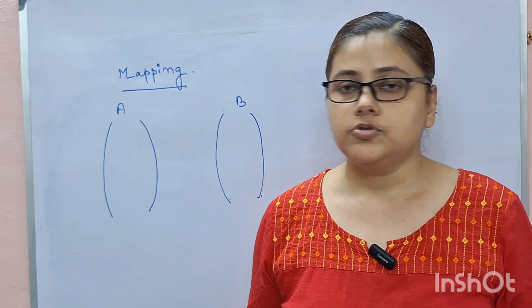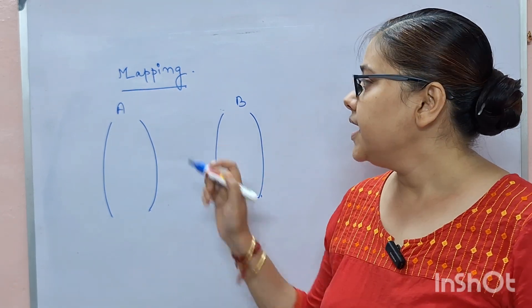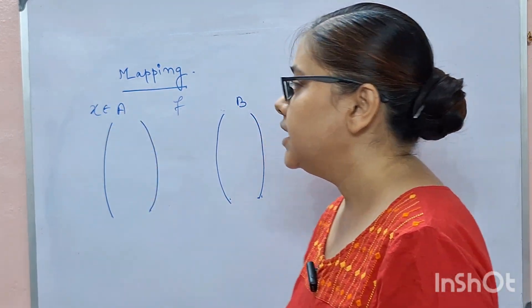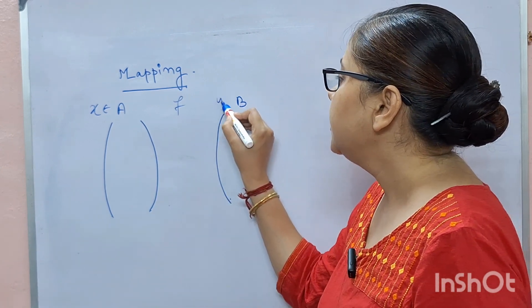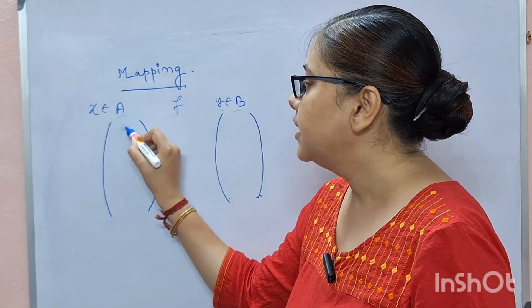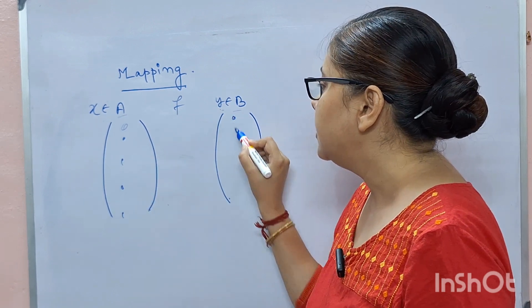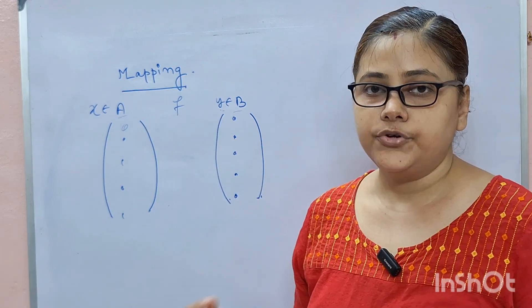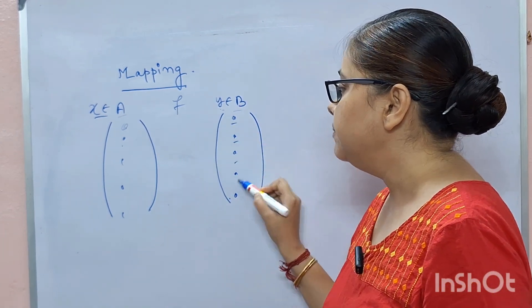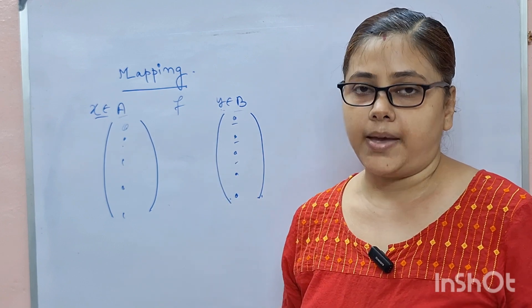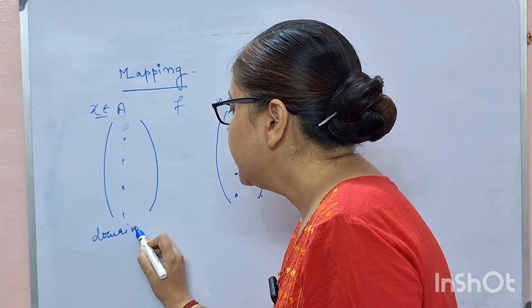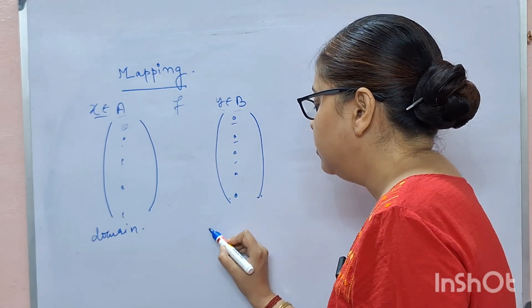What do you mean by a mapping? Suppose A and B are two non-empty sets. A mapping F is a rule that assigns for each element X in A to a definite element Y in B. That is, there will be two non-empty sets A and B with elements in each. If F is a rule by which for each element X we can get a definite element Y in B, then that rule is said to be a mapping. Since A comes first, it is known as the domain, and B is known as the co-domain.